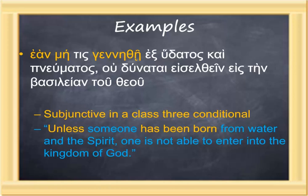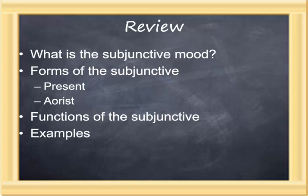In this lesson, we have explored the subjunctive mood — the mood of possibility and probability. We've looked at its forms in the present and aorist; the key for identifying those forms is the long connecting vowel. We've talked about the functions of the subjunctive: hortatory, deliberative, purpose, and conditional, and we've explored some examples. It's now time to work with the material, ask some questions, and translate.